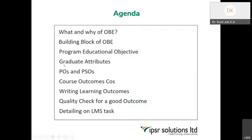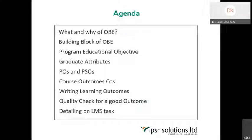The building blocks include program educational objectives, graduate attributes, program outcomes, PSOs and POs. This will give you clarity on the architecture of outcome-based education. Then we will be going into writing learning outcomes — how to write a learning outcome. You will have a magical formula for writing a clear-cut learning outcome, and this formula will be developed into program outcomes, program specific outcomes, and course outcomes in tomorrow's section.